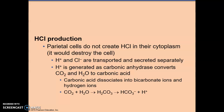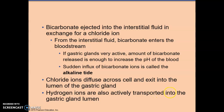Parietal cells do not create hydrochloric acid in their cytoplasm because it would destroy the cells, so the hydrogen ions and chloride ions are transported and secreted separately into the lumen of the stomach. The hydrogen ion is generated as carbonic anhydrase converts carbon dioxide and water to carbonic acid, which then dissociates into bicarbonate ions and hydrogen ions. The bicarbonate is ejected into the interstitial fluid in an exchange for a chloride ion, and the bicarbonate enters the bloodstream.